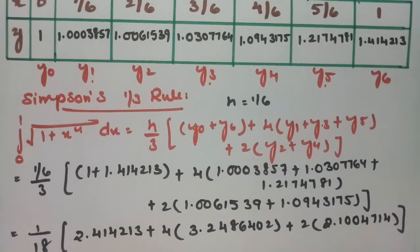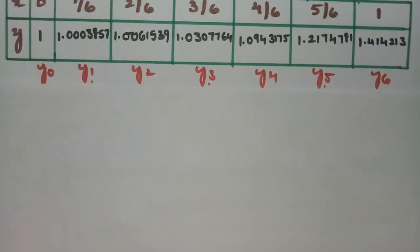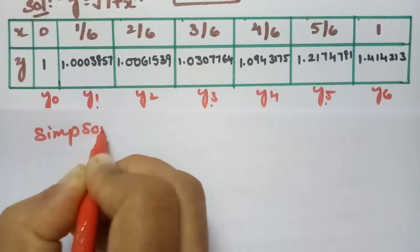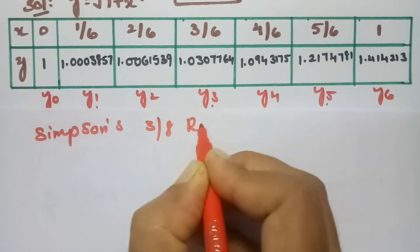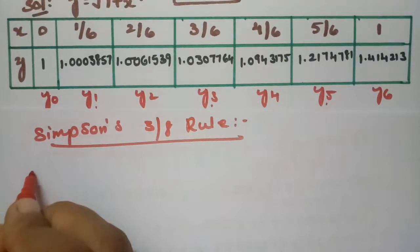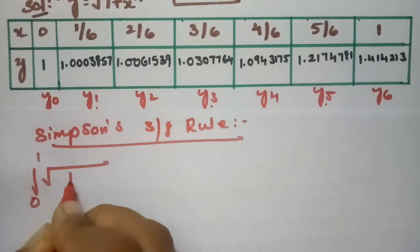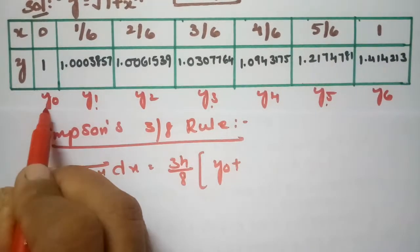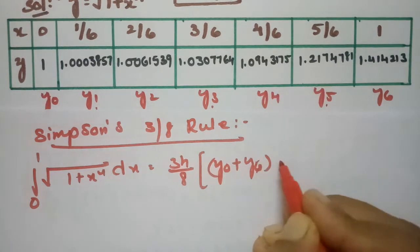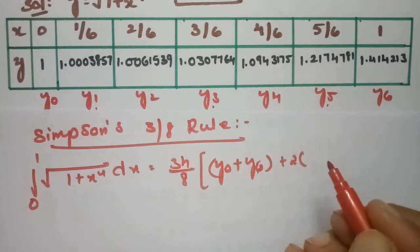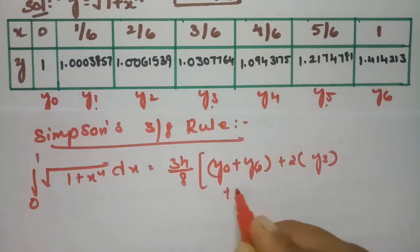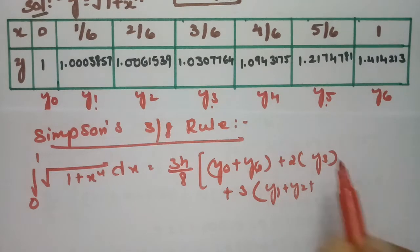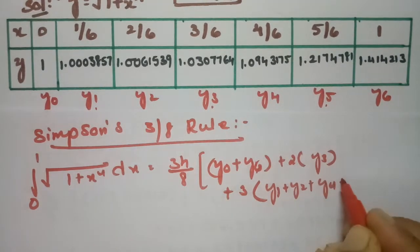Now applying Simpson's 3/8 rule. The formula is: ∫₀¹ √(1+x⁴) dx = 3h/8 × [(y₀ + y₆) + 2×y₃ + 3×(y₁ + y₂ + y₄ + y₅)]. Here the only multiple-of-3 ordinate is y₃, and the remaining ordinates are y₁, y₂, y₄, and y₅. All 7 ordinates are clearly accounted for. The h value is 1/6.